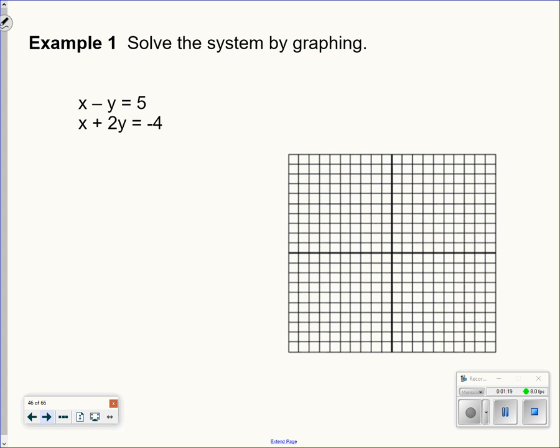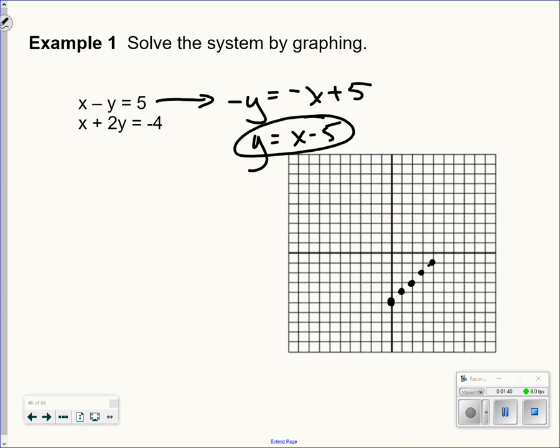We're going to graph two equations. So I need to solve this for y. I'm going to subtract x and divide by negative 1. So the first line is y equals x minus 5. I'm going over here to graph it. Negative 5 with a slope of 1.